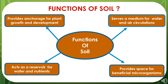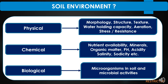To study the functions of soil: it can be described as providing anchorage for plant growth and development. It serves as a medium for water and air circulation. Soil acts as a reservoir for water and nutrients and provides a space for beneficial microorganisms. Soil environment is one of the important factors which decides the growth and development of the crop. Soil environment is categorized into three types: physical environment, chemical environment and biological environment.